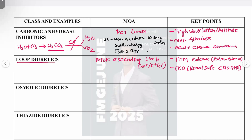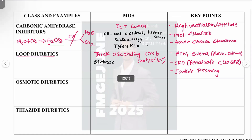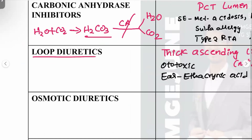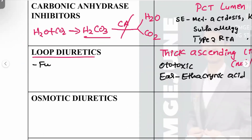Loop diuretics can also be used in iodine and bromide poisoning. A key concern: these drugs are highly ototoxic. Remember — E for ear and E for ethacrynic acid, which is the most ototoxic. Furosemide is the most commonly used loop diuretic in hospital settings.